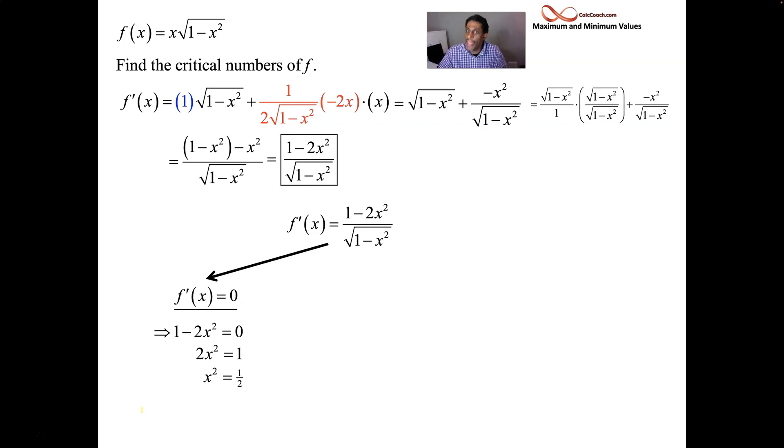One minus two x squared equals zero means that two x squared is equal to one, x squared is equal to a half, plus or minus the square root of a half. That might look familiar. Take some trig. Okay, the square root of a half is our friend root two over two. What you get when you plug in pi over four into sine or cosine.